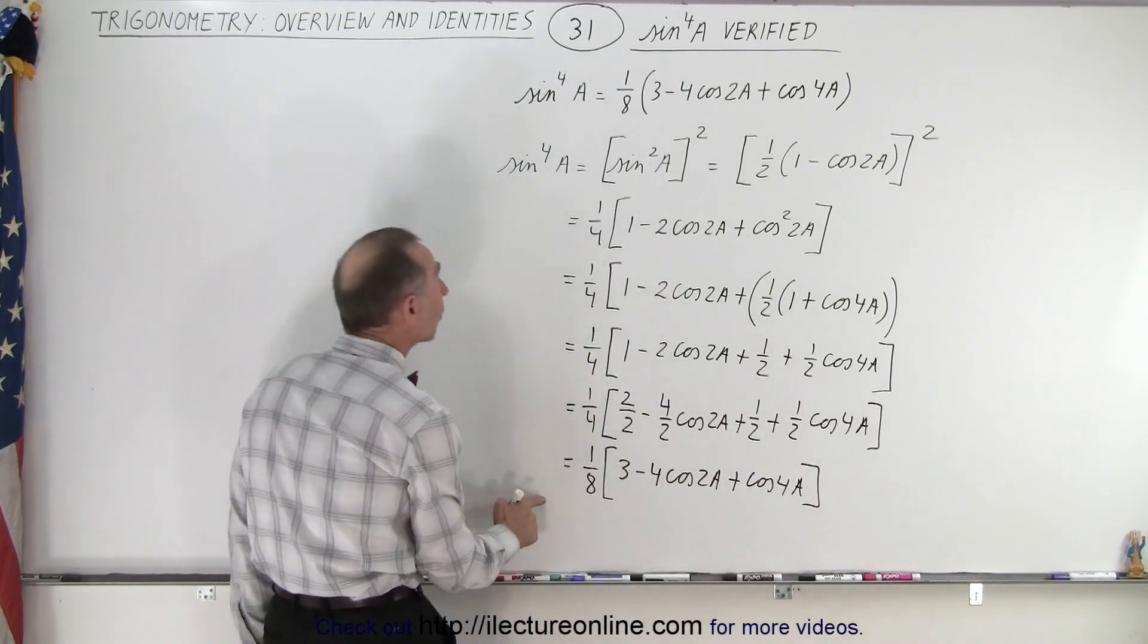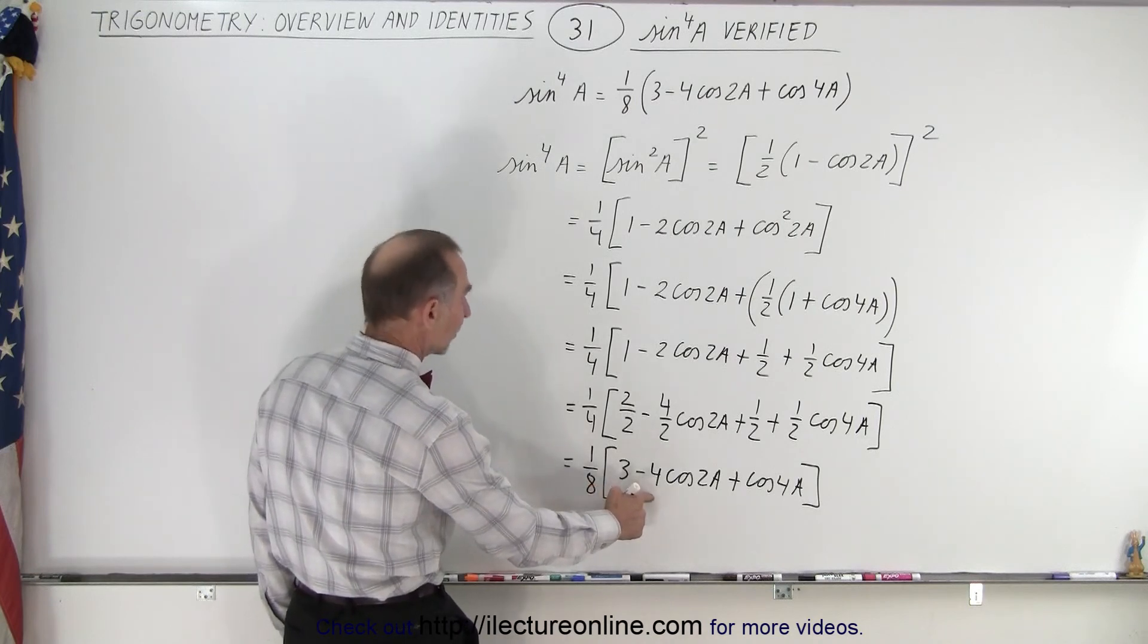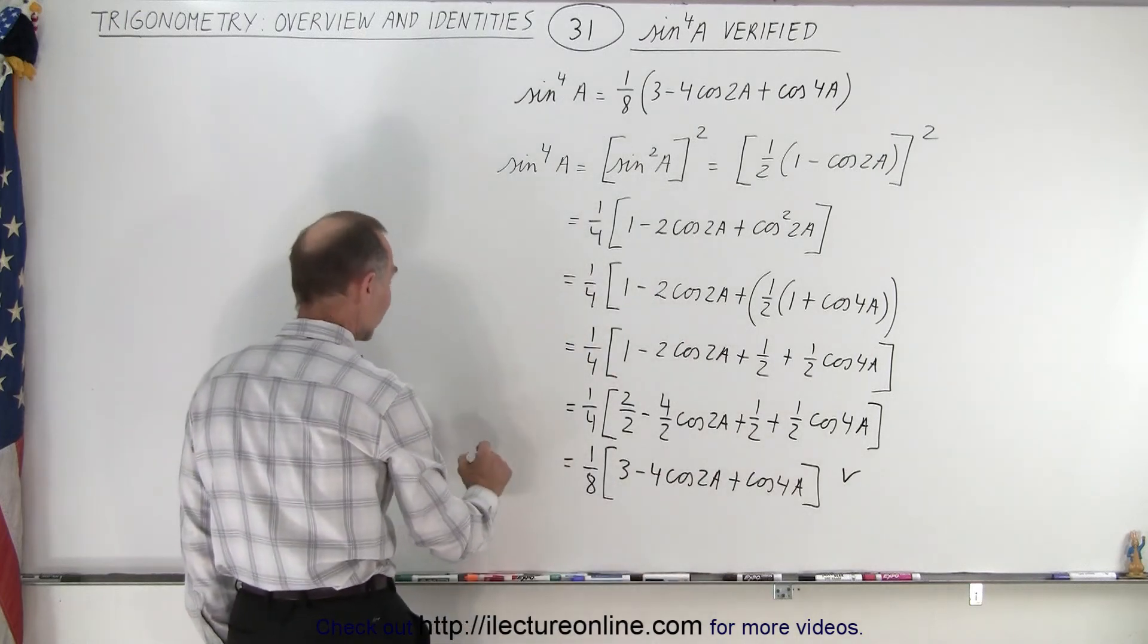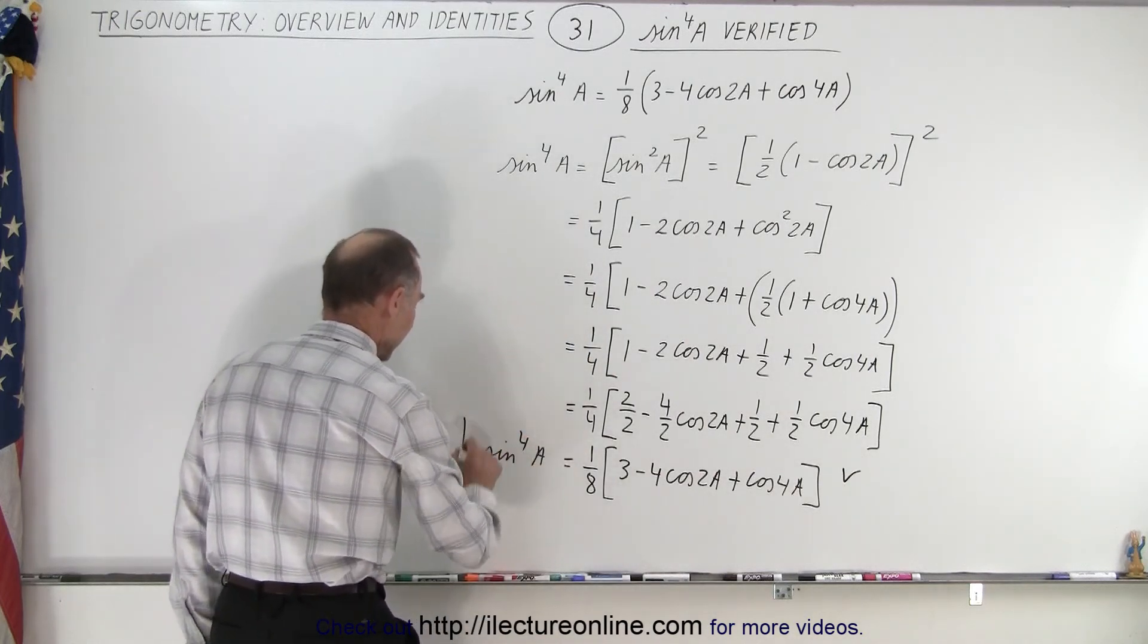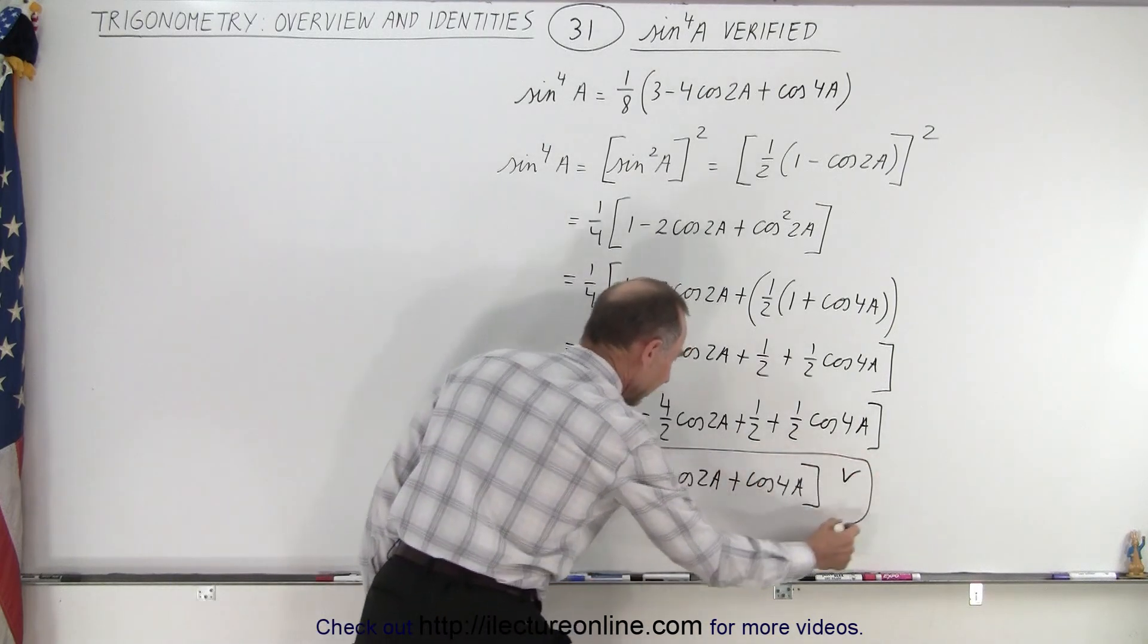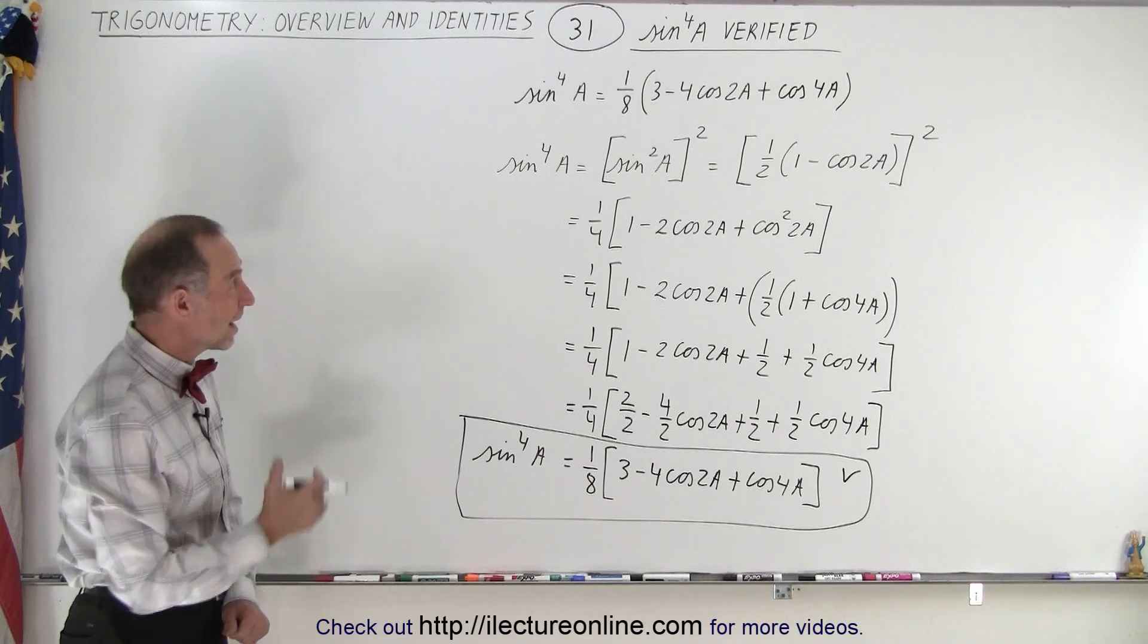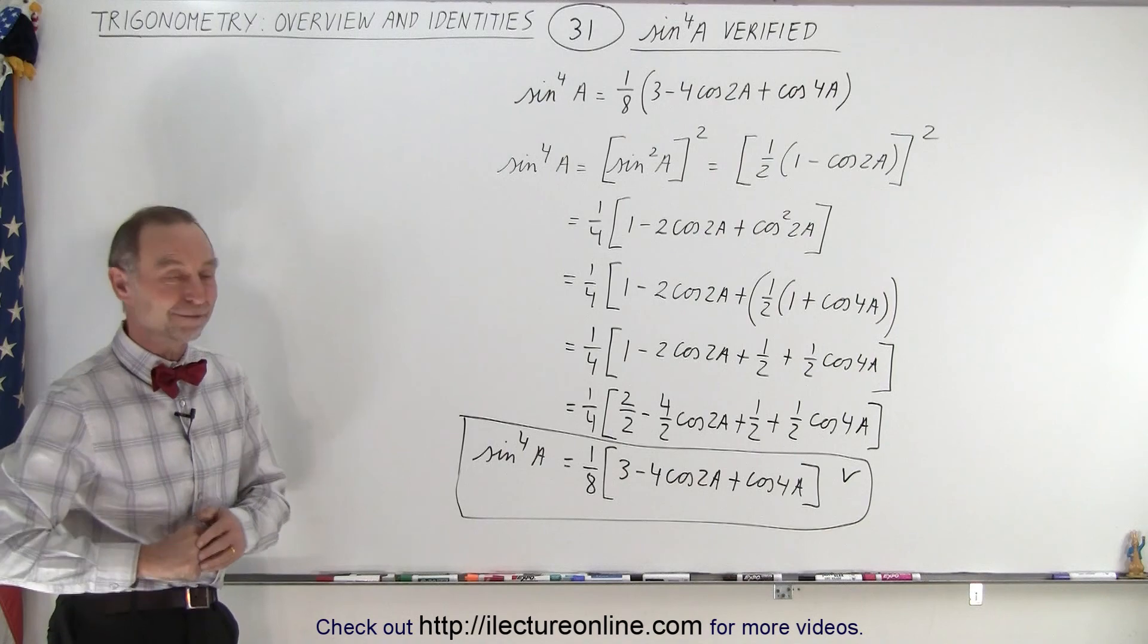And I think I got what I needed to get. So this is 1/8 times 3 minus 4 times the cosine of 2a plus the cosine of 4a, which is exactly what I was looking for, and that is equal to the sine to the fourth power of a. And so there is the identity of the sine to the fourth power of a, and that is how we derive it, or verify it, either way. That is how it's done.